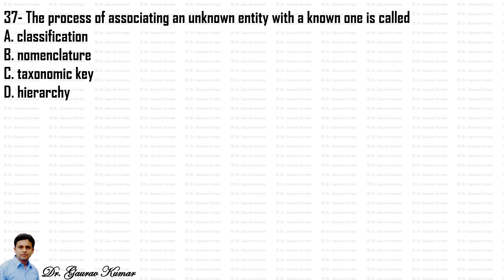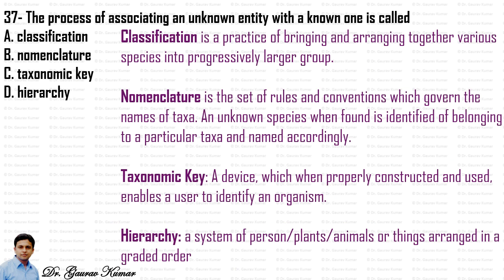Next question: the process of associating an unknown entity with a known one is called — options are classification, nomenclature, identification, or taxonomic hierarchy. Classification arranges species into progressively larger groups. Nomenclature governs the naming of taxa. Identification is associating an unknown species with a known taxon. A taxonomic key enables a user to identify an organism. Hierarchy is a graded order system. The correct option is identification.